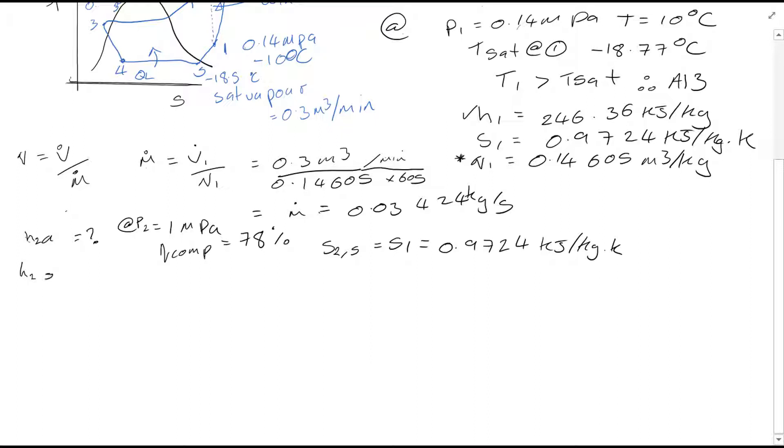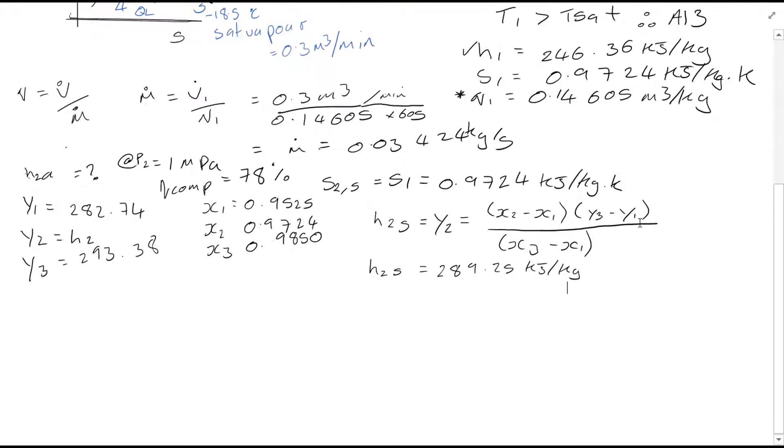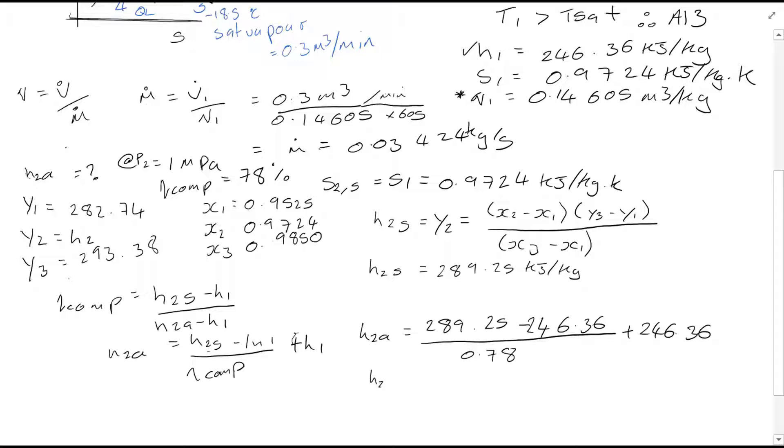H₂S can be found by interpolating the superheated R134A table A13. I've been through interpolation in the previous video, so I'm just going to skip over it here. So you can see we found the value for H₂S there. Now what we're interested in, we know the equation from the data sheet of the compressor: ηcomp equals (H₂S minus H₁) over (H₂A minus H₁). So we can simply just rearrange this equation now to find H₂A. So H₂A is equal to 301.35 kJ per kg.